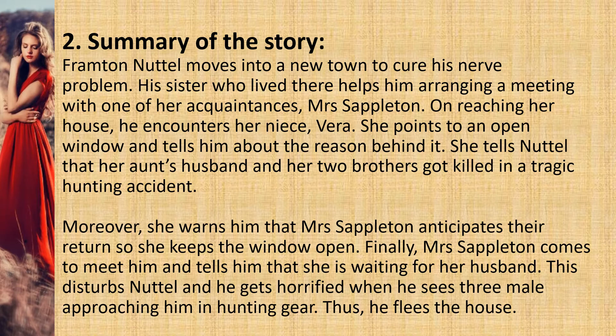Summary of the Story. Frampton Nattel moves into a new town to cure his nerve problem. His sister, who lived there, helps him by arranging a meeting with one of her acquaintances, Mrs. Seppleton. On reaching her house, he encounters her niece Vera. She points to an open window and tells him the reason behind it. She tells Nattel that her aunt's husband and her two brothers got killed in a tragic hunting accident. Moreover, she warns him that Mrs. Seppleton anticipates their return, so she keeps the window open.